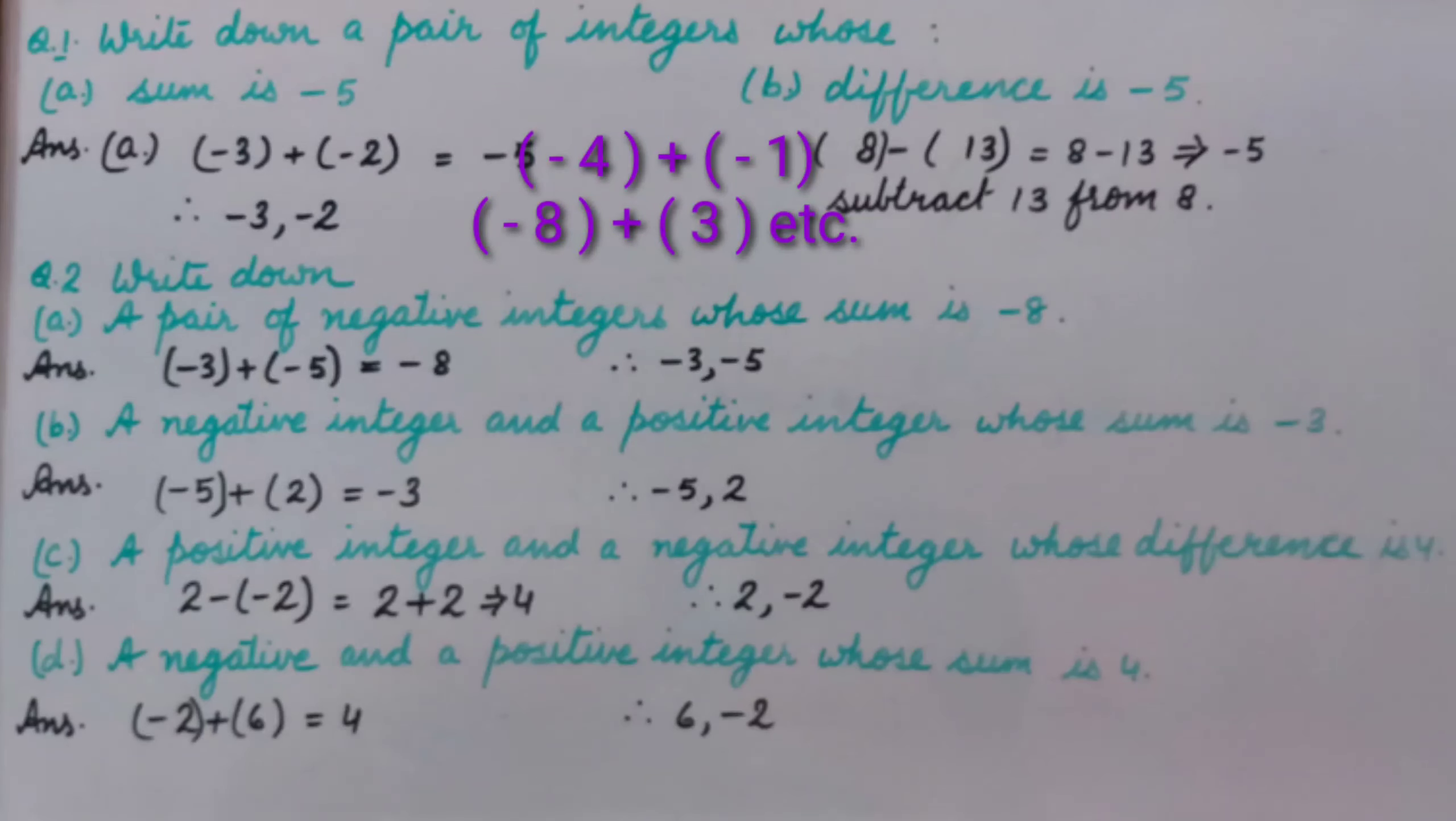B part, difference is minus 5. Here I have taken two integers, 8 and 13, where 13 is subtracted from 8. So we have minus 5 as the answer. It means we are subtracting 13 from 8 to get difference minus 5.